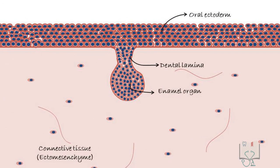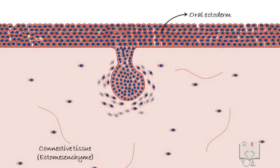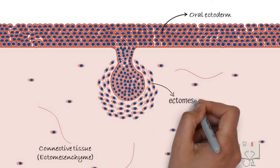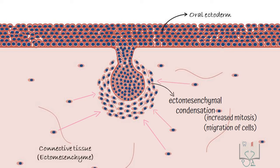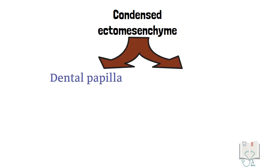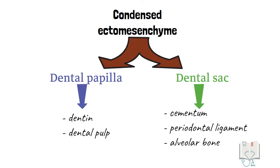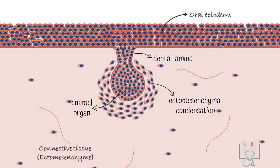As the enamel organ is formed, the surrounding ectomesenchymal cells get closely packed around and below it. This is known as ectomesenchymal condensation, which occurs due to two reasons: increased mitosis of cells near the enamel organ, and migration of cells adjacent to the enamel organ. The area of condensed ectomesenchyme later forms the dental papilla and dental sac, which form various parts of the teeth, but at this stage they cannot be distinguished as distinct parts.